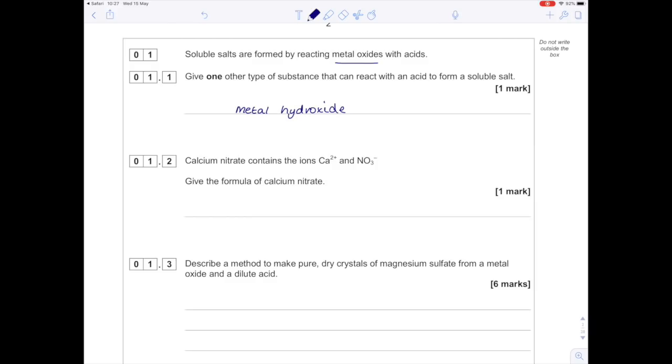Question 2: calcium nitrate contains the ions Ca2+ and NO3-. Give the formula of calcium nitrate. I prefer to look at the ions and work out what the problem is - calcium has a 2+ charge and nitrate only has a 1- charge. So I need two nitrates, which means Ca(NO3)2. The brackets are essential because the two applies to both the nitrogen and the oxygen.